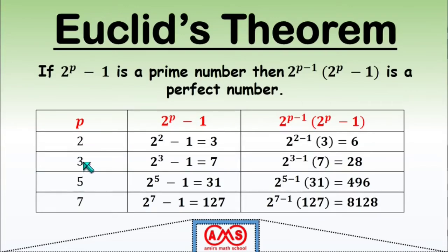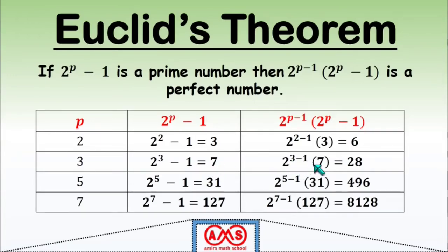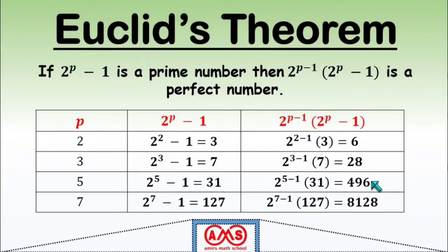For p = 3, we get 2^3 − 1 = 7, which is prime. According to Euclid's theorem, 2^(3−1) × 7 = 4 × 7 = 28, which is a perfect number. For p = 5, we get 2^5 − 1 = 31, and 2^(5−1) × 31 = 16 × 31 = 496, which is the next perfect number — and we already proved 496 is a perfect number by the definition.